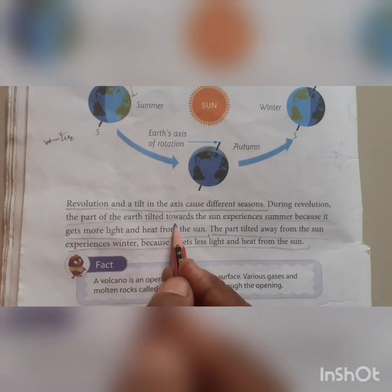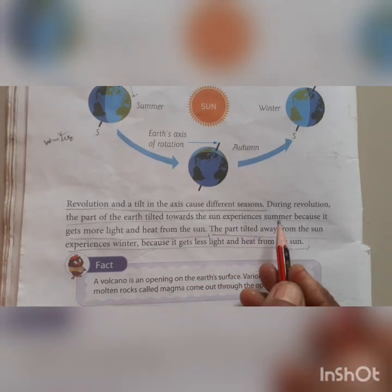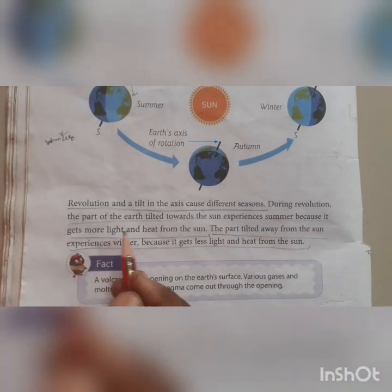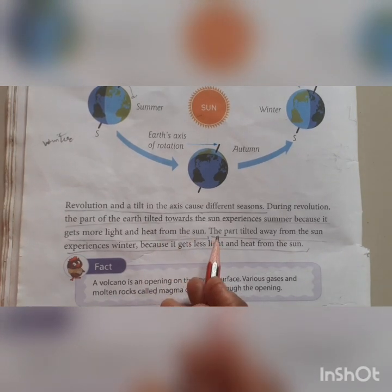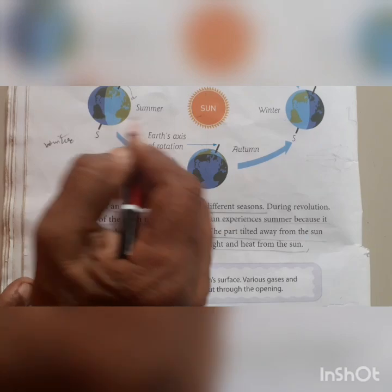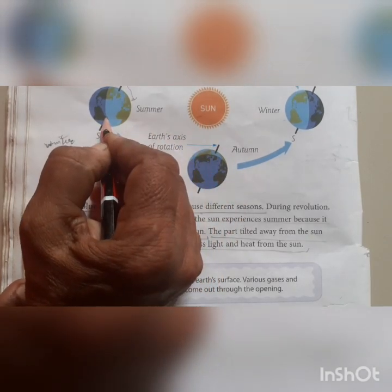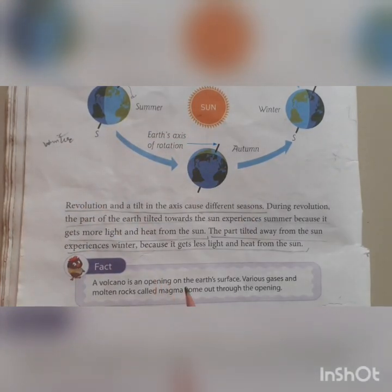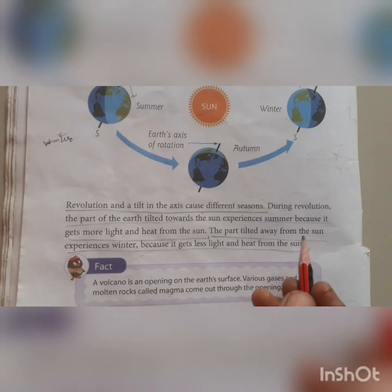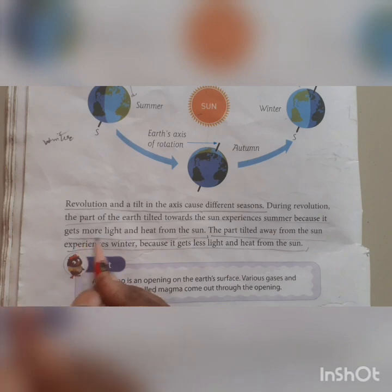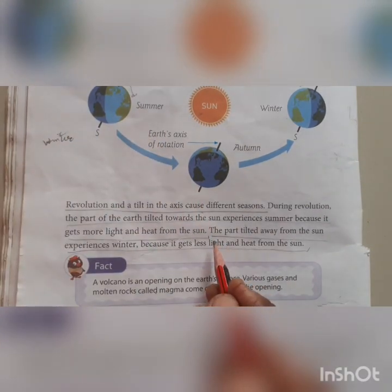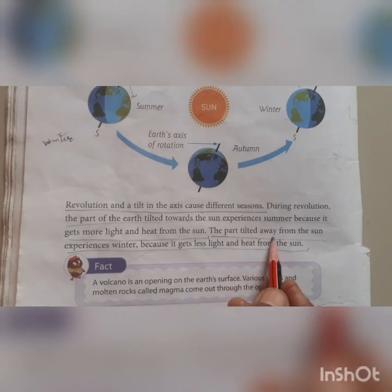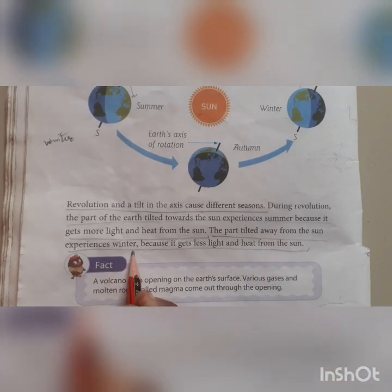During revolution, the part of the earth tilted toward the sun experiences summer because it gets more light and heat from the sun. The part facing the sun gets so much heat, which is why summer is warm — it receives more light and heat from the sun.